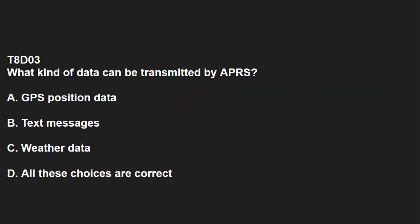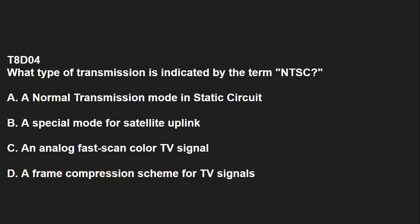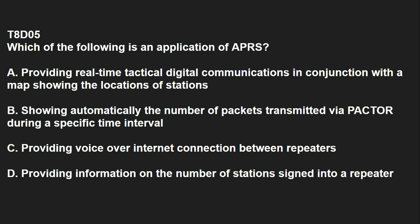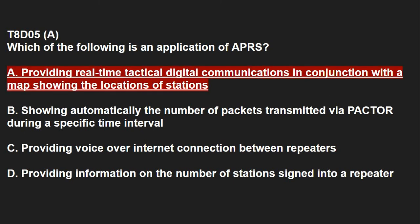T8D03: What kind of data can be transmitted by APRS? All of these are correct: GPS position data, text messages, and weather data. T8D04: What type of transmission is indicated by the term NTSC? An analog fast scan color TV signal. T8D05: Which of the following is an application of APRS? Providing real-time tactical digital communication in conjunction with a map showing the locations of stations.